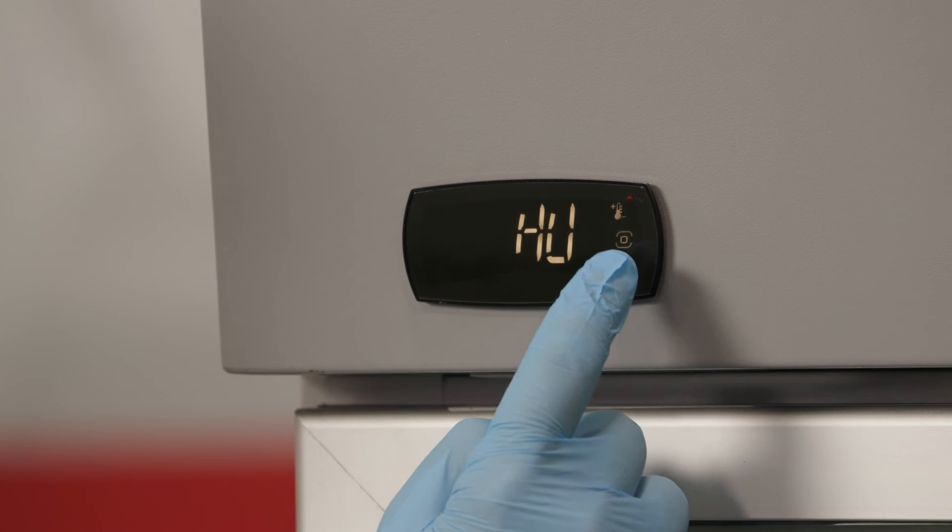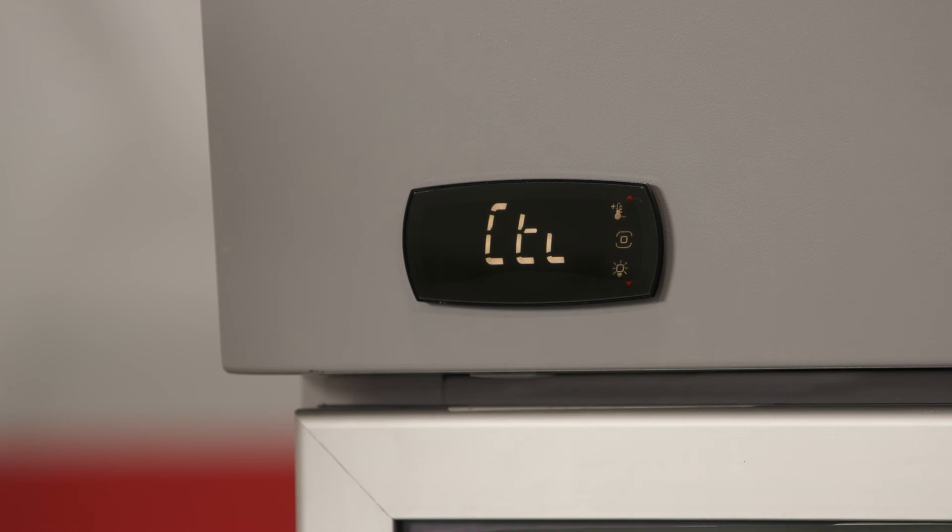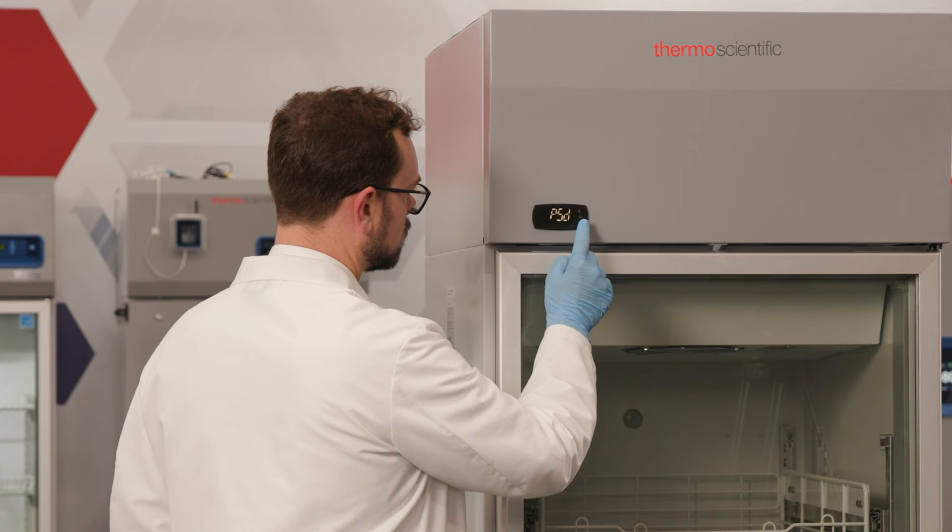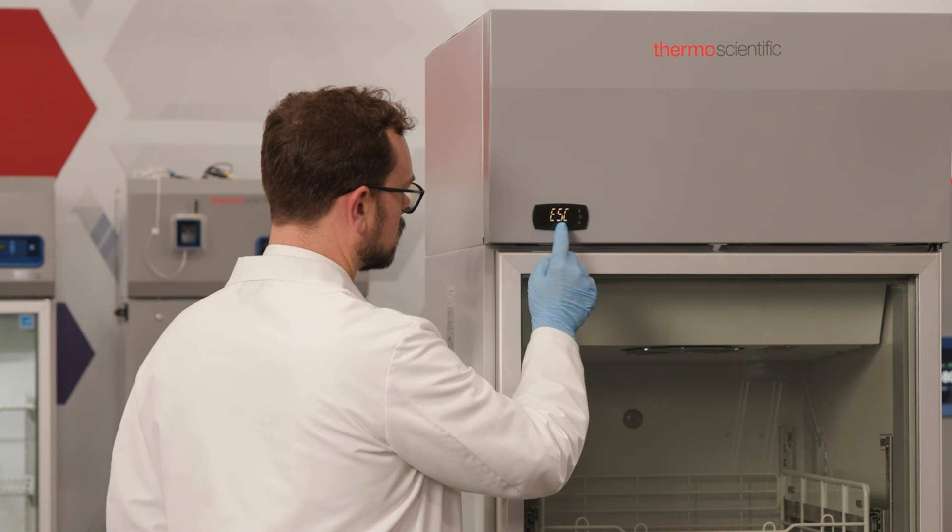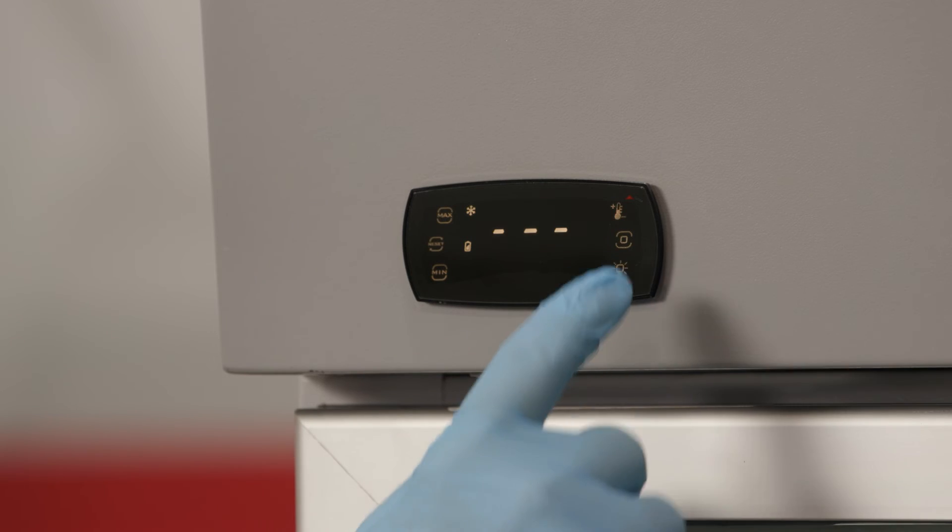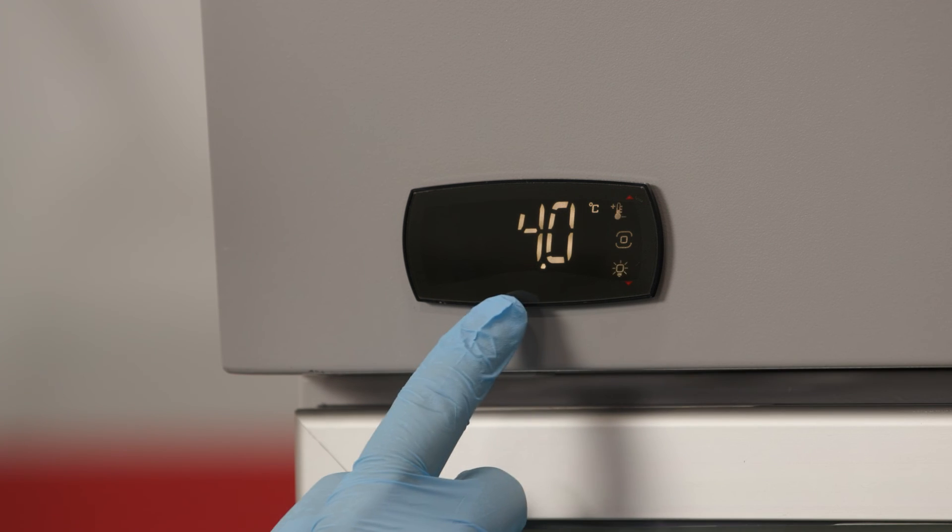Scroll through the CTL menu until you find ESC or escape. Press the program button to select ESC and return to the previous menu, repeating the process until you have exited the programming menu and the standard display appears on the controller. View and confirm your new temperature setpoint by pressing the temperature setpoint button at the top right of the controller.